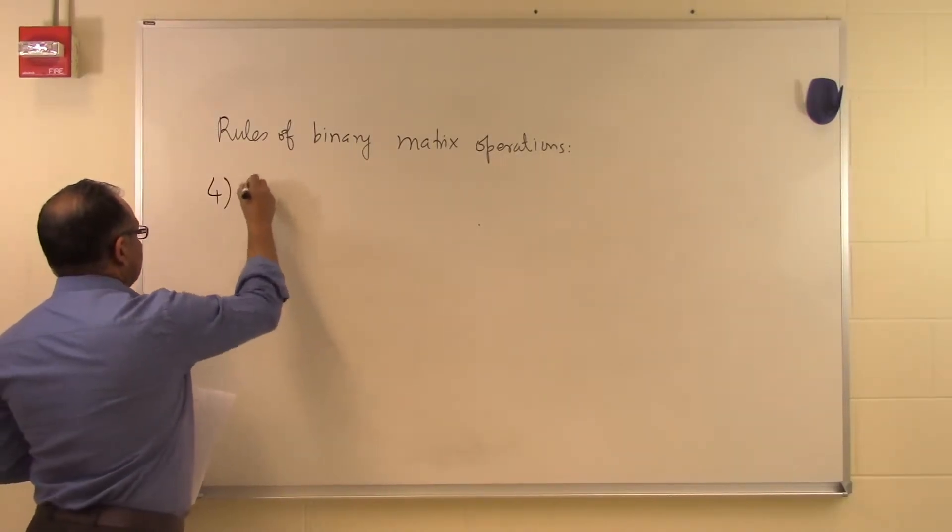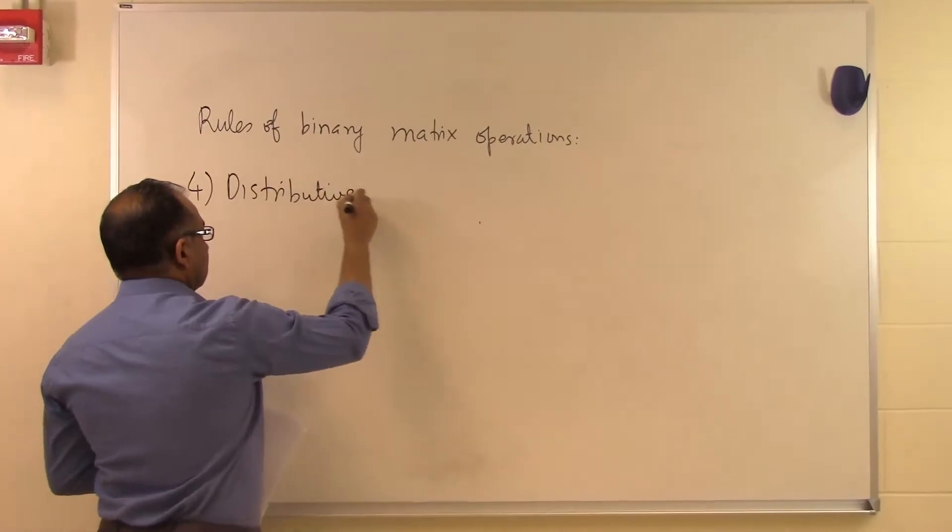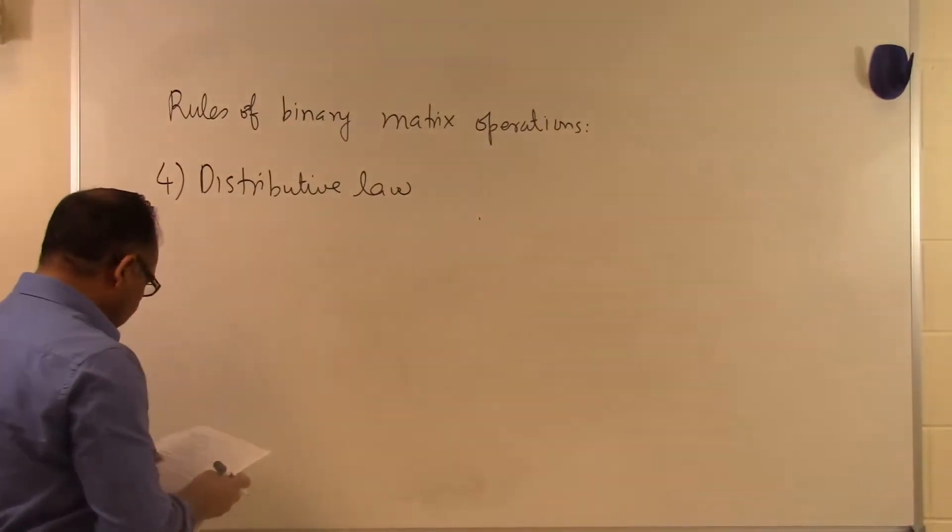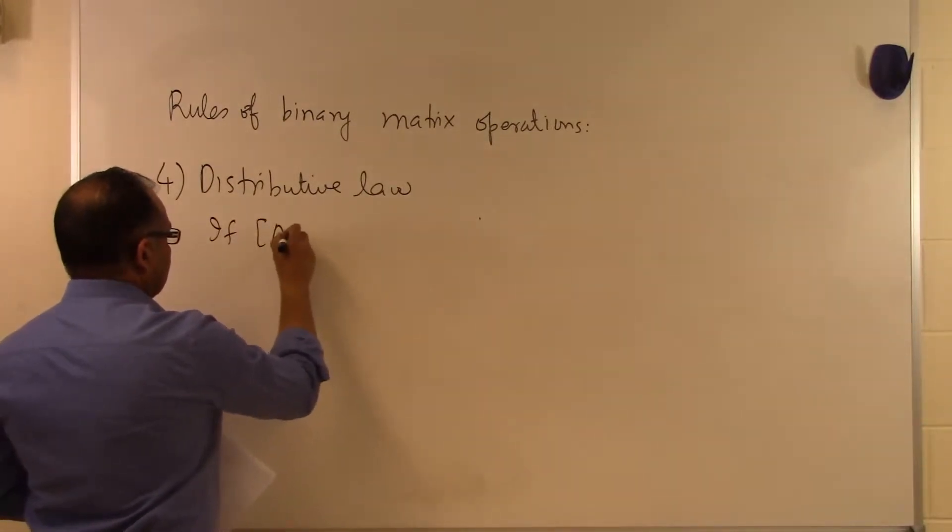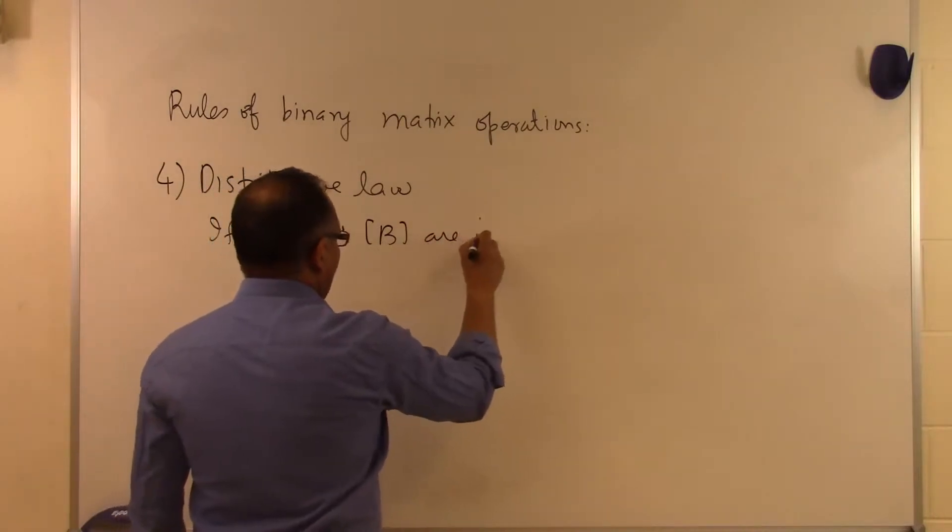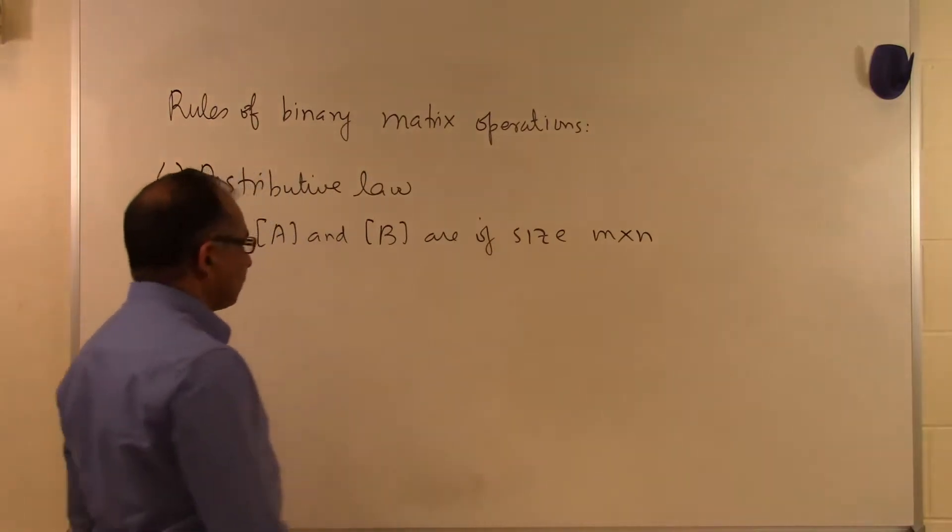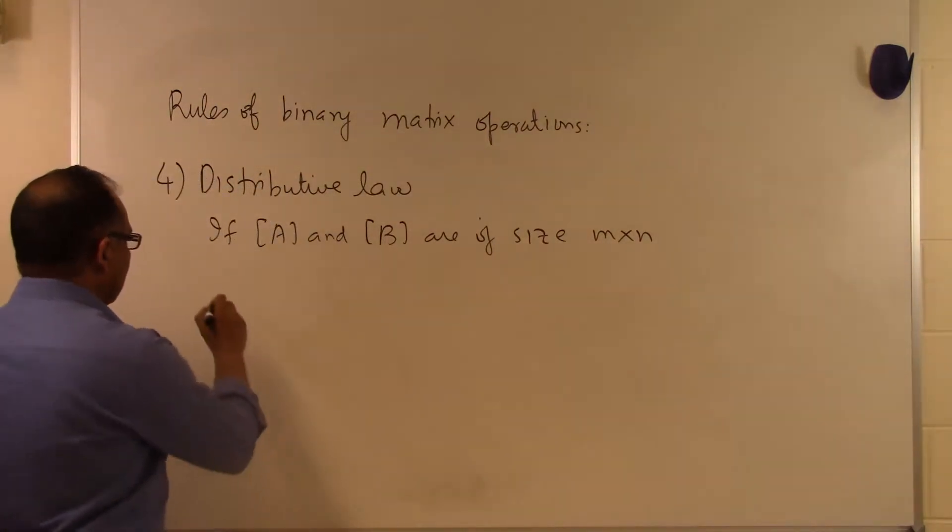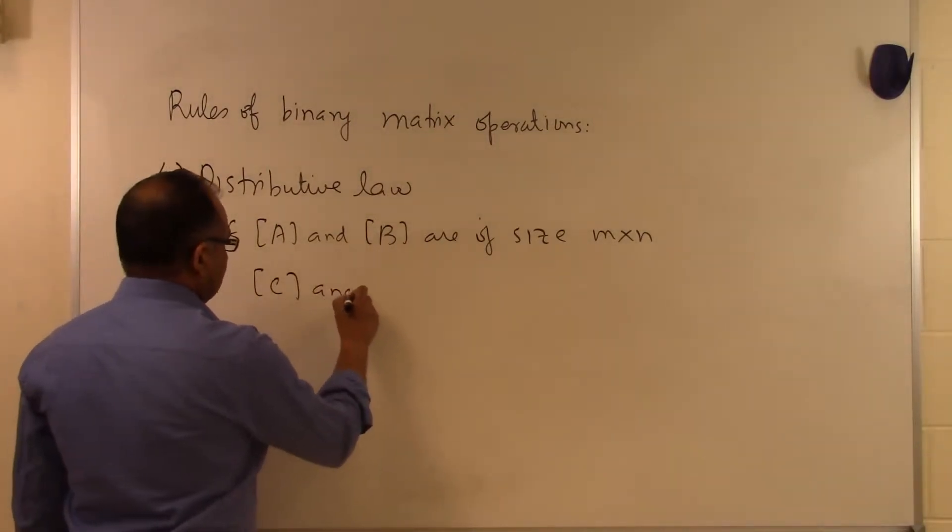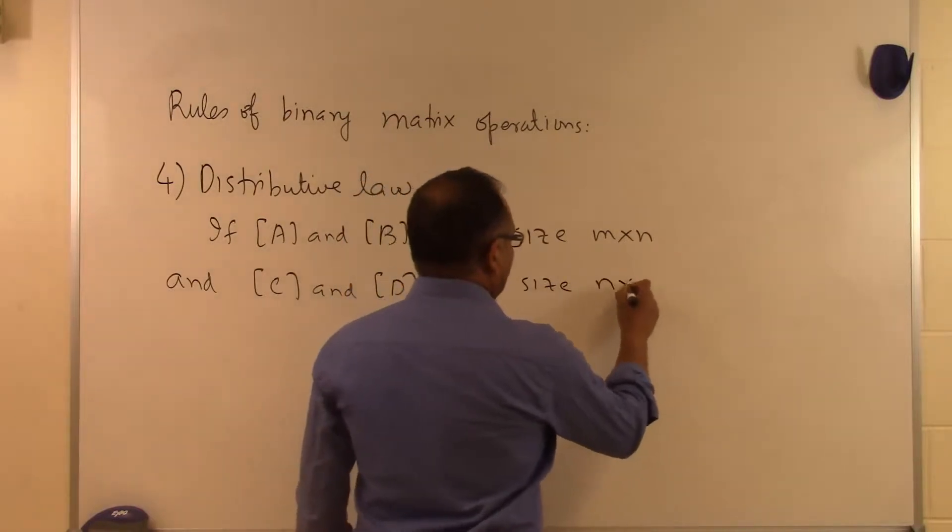And in this one we will talk about the distributive law of binary operations. So if A and B are of size M by N, let's suppose we have a rectangular matrix of M rows and N columns, both A and B.